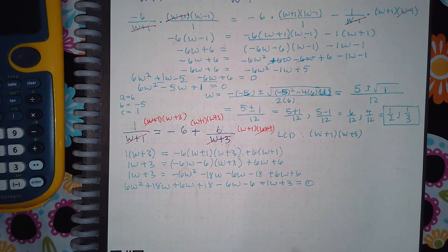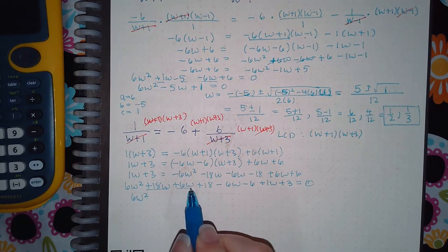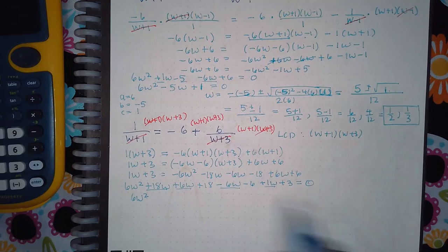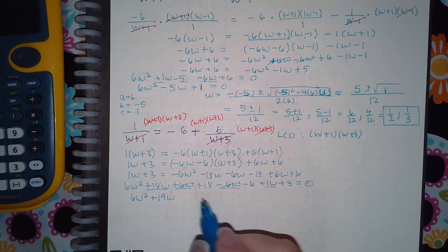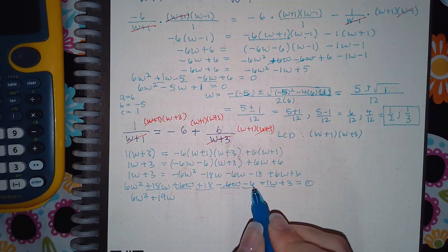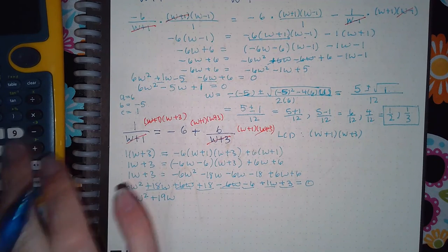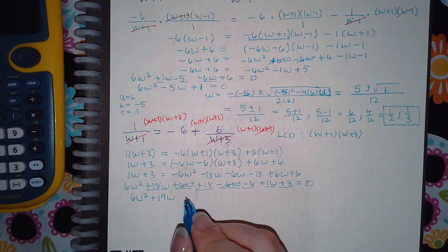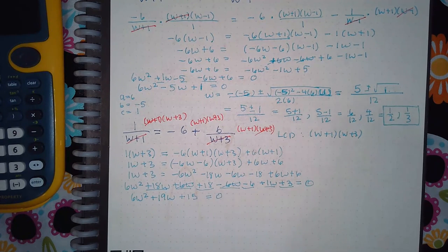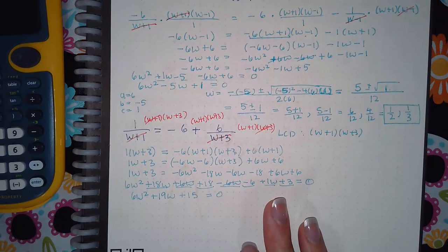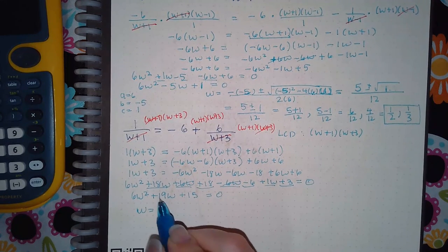Now I'm going to combine my like terms. So I have 6w squared, and then I have all of these that need to be combined. Those will actually cancel. So I get 19w. Then I'm going to take my constants and combine those. I get positive 15 and equal to 0.